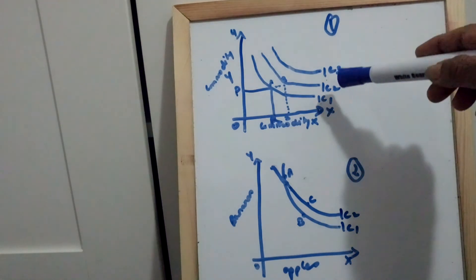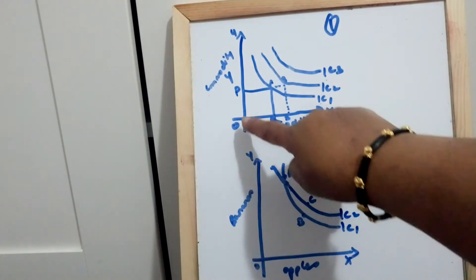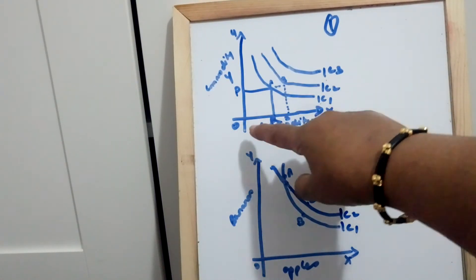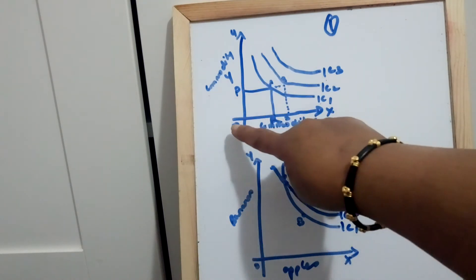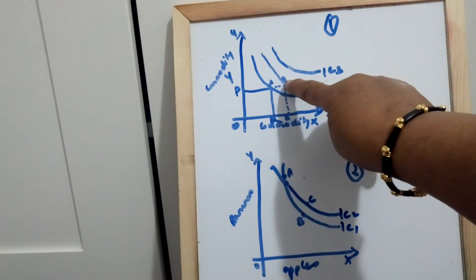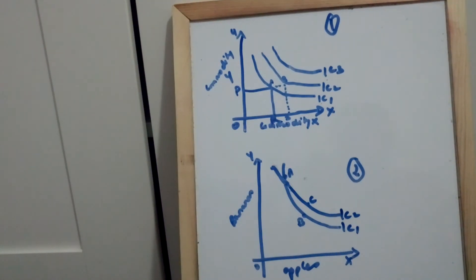At point B on IC2 you find more satisfaction. At point A, the combination is OR and OP; at point B on IC2, the combination is OS and OP. Since OS is greater than OR, you get a higher level of satisfaction on IC2. This is how higher indifference curves represent higher levels of satisfaction.